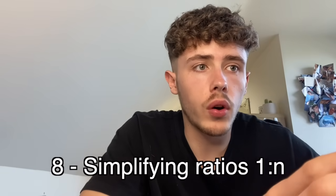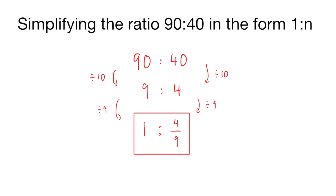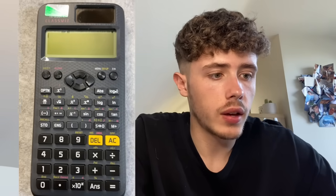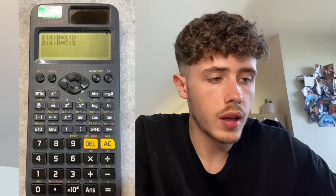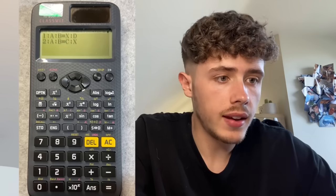Tip eight: converting ratios into the form 1 to N. For example, convert the ratio 90 to 40 into 1 to N. Go to menu and press number 4 to open the ratio function. Press number 2 for 1 to N, enter 90 to 40, and the calculator tells you X — giving you 1 to 4/9. Ratios can be a complicated topic, so this is a very useful tool.